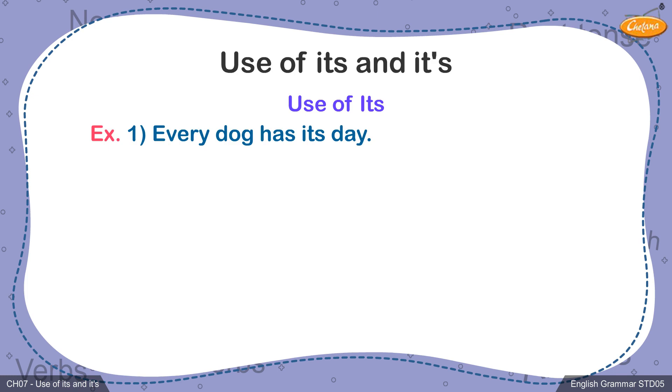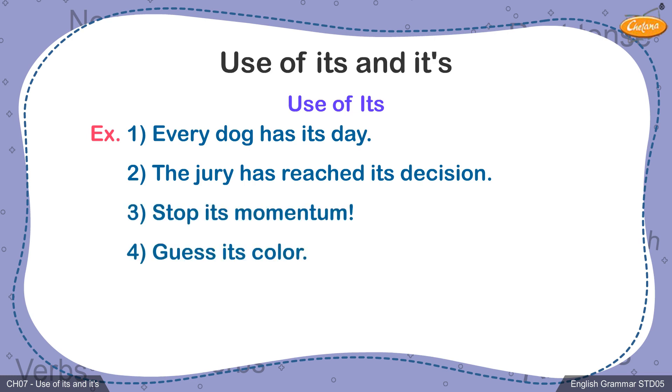1. Every dog has its day. 2. The jury has reached its decision. 3. Stop its momentum. 4. Guess its color. In every sentence, the word its has been used to indicate that the noun being spoken about in the sentences owns or possesses something.